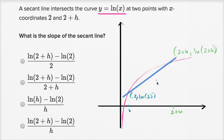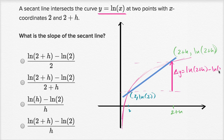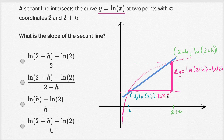The way we did this is we figured out our change in y — we're going from y equals natural log of two, to y equals natural log of two plus h. So our change in y is natural log of two plus h minus natural log of two. And our change in x: we're going from two to two plus h, so our change in x is equal to h. So the slope of the secant line is change in y over change in x, which is exactly what we have.